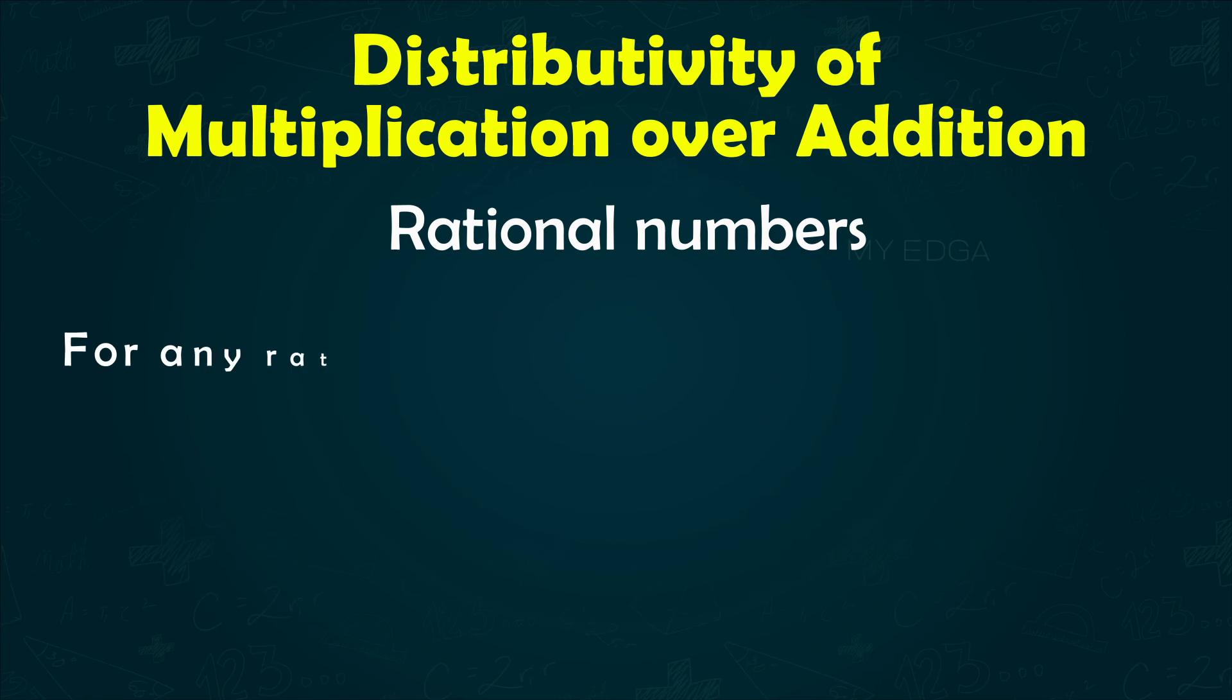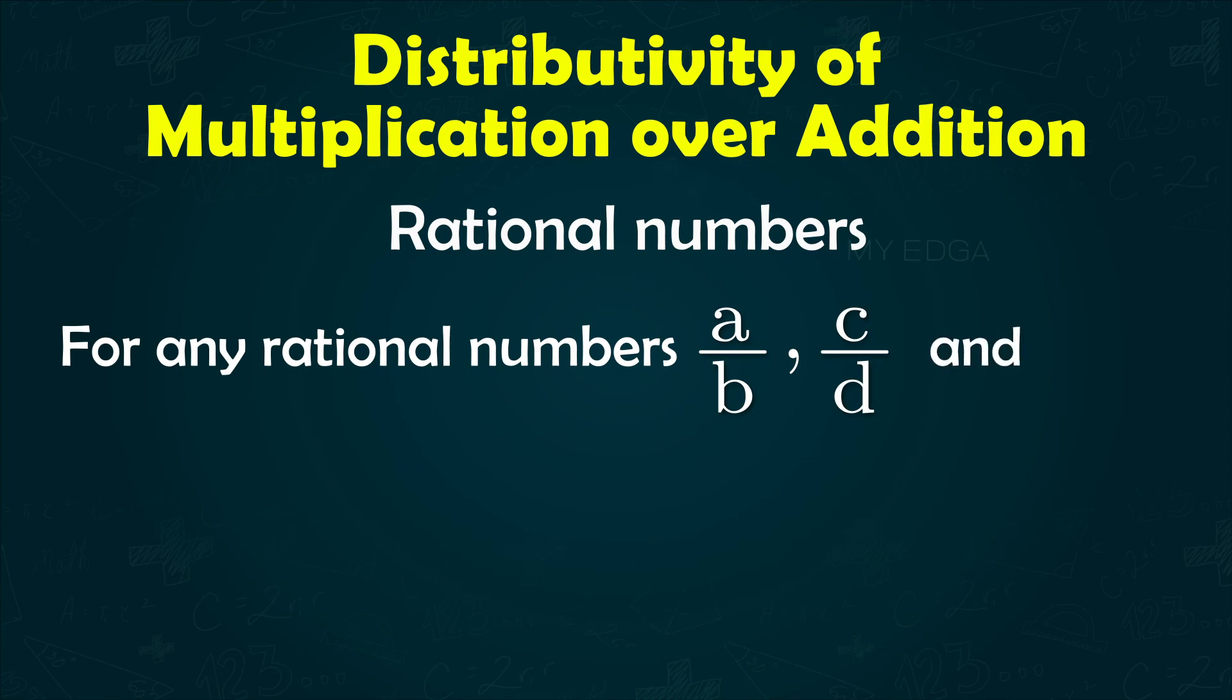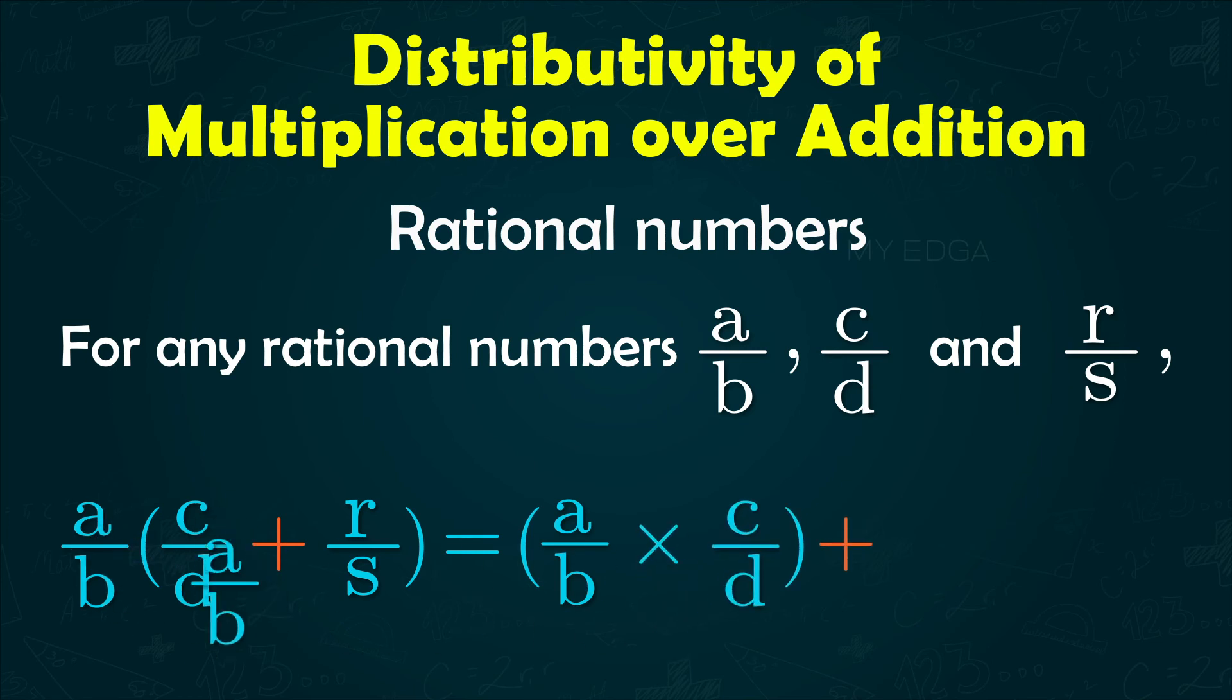In general, for any rational numbers a/b, c/d, and r/s, a/b into (c/d + r/s) equals a/b into c/d plus a/b into r/s.